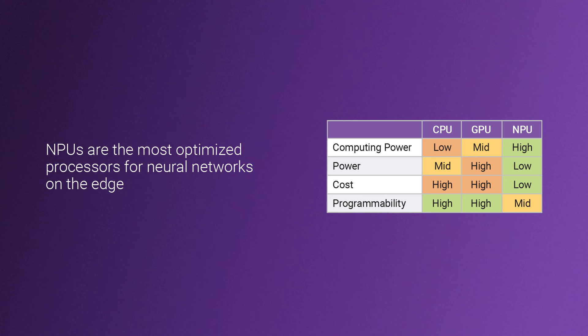First of all, given the power and area requirements for edge applications, you will want to choose the hardware solution that is most optimized for neural networks — that is a neural processing unit, or NPU.